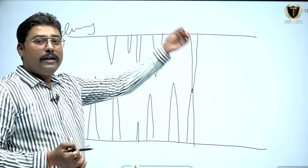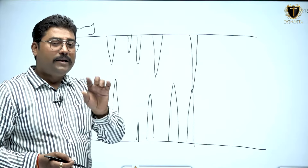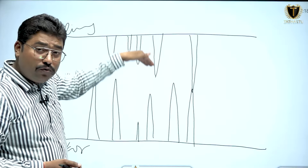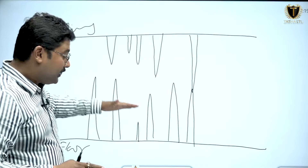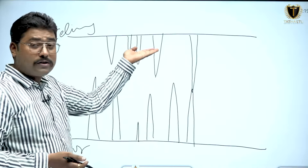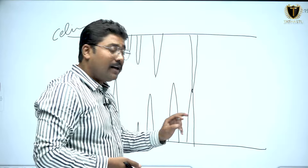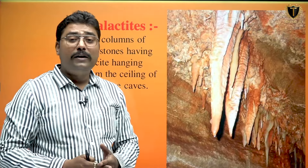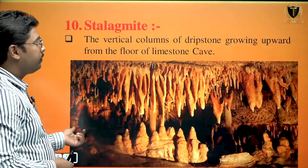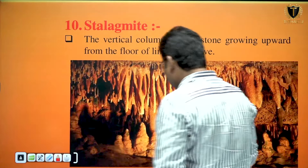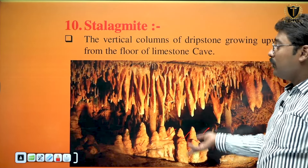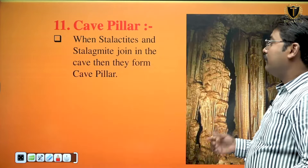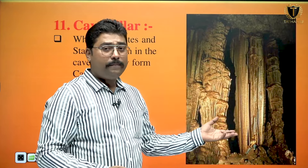When stalactites and stalagmites meet they will form the cave pillar. Three things: stalactites — the deposition attached to the ceiling moving down towards the floor; stalagmites — the deposition attached to the floor of the cave moving towards the ceiling; and when stalactites and stalagmites join and form a pillar-like structure, they are considered as cave pillars or cavern pillars, as you can see in the image.